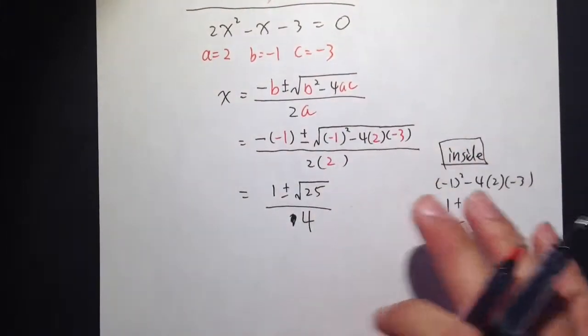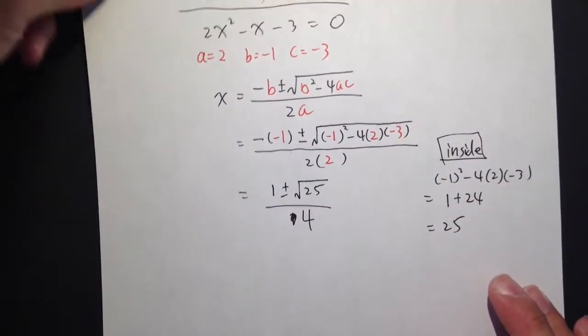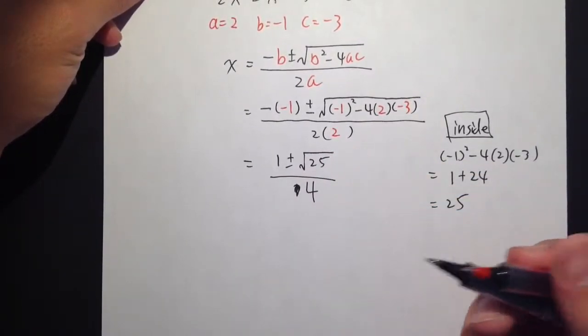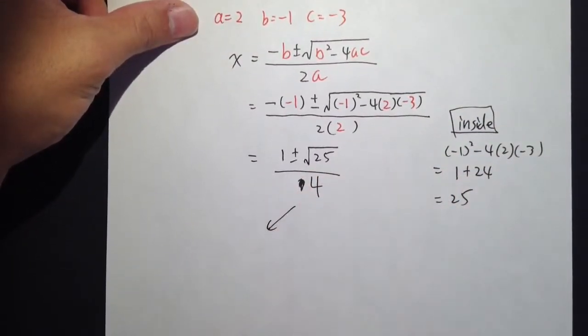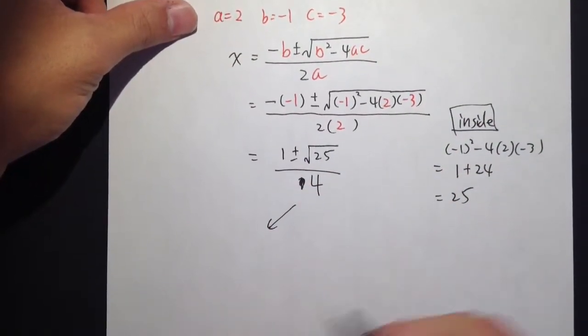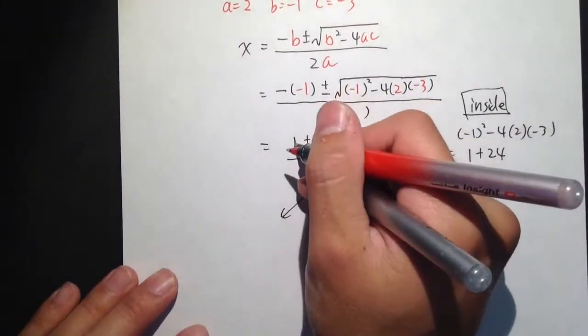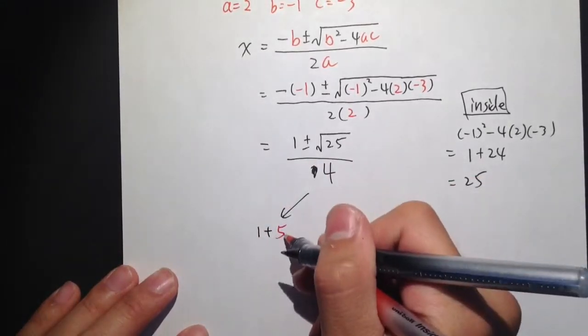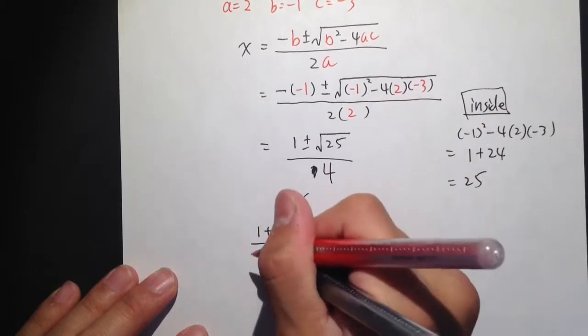So now this is pretty much almost done. Now, we just need to think about we have the square root of 25, right? That's actually doable. Square root of 25 is equal to 5. So then we are going to split this into two parts. We are going to work out both of the numbers. The first part, it will be the 1 plus 5, 1 plus 5, because we have square root of 25 that's equal to 5, over 4.